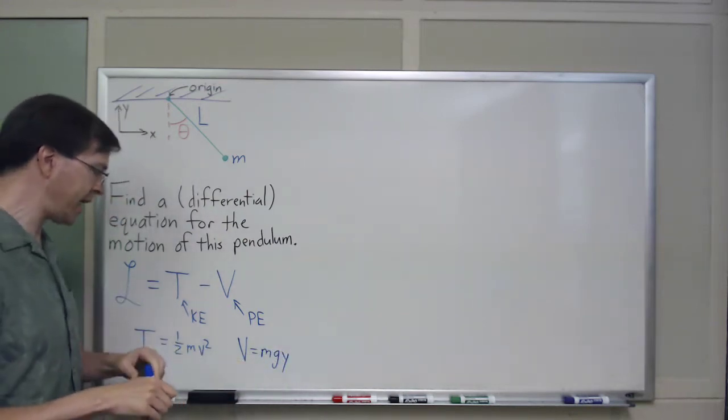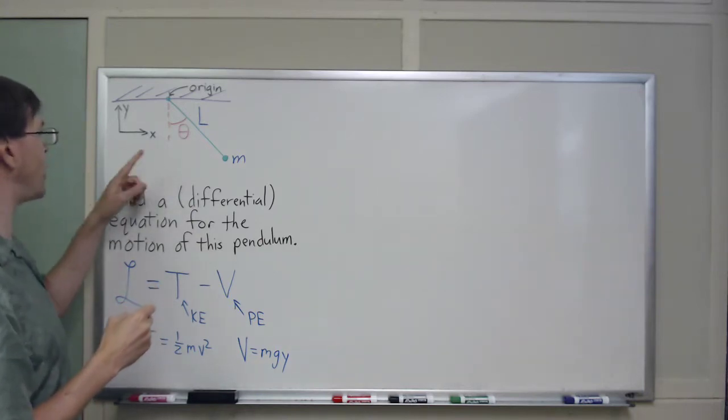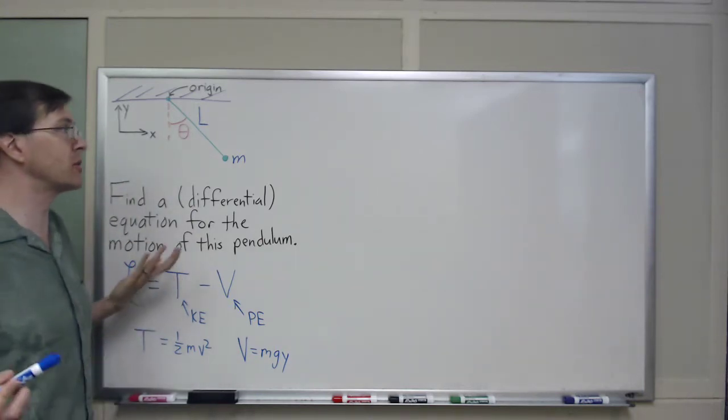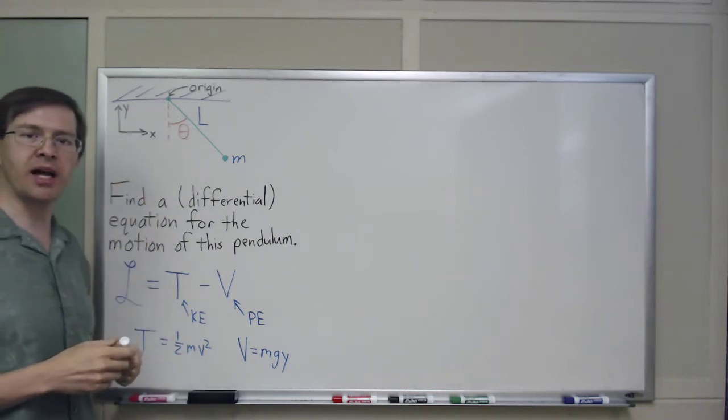I said y here, I guess I should have been explicit, saying that I've defined some coordinates, x horizontal, y vertical, and just for convenience, I've chosen the origin to be the pivot point up at the top.